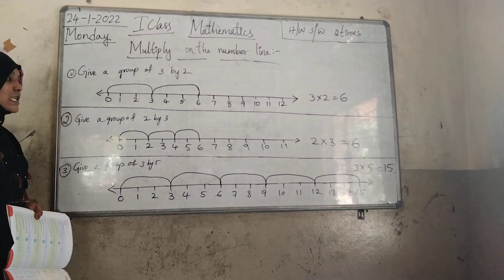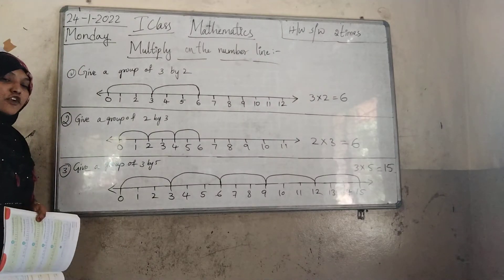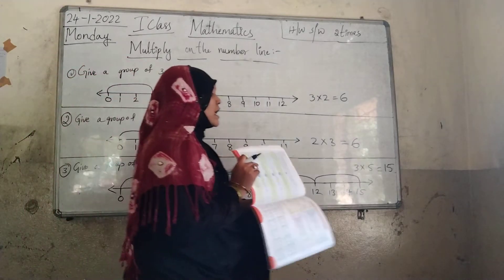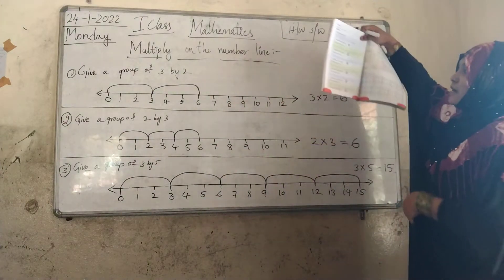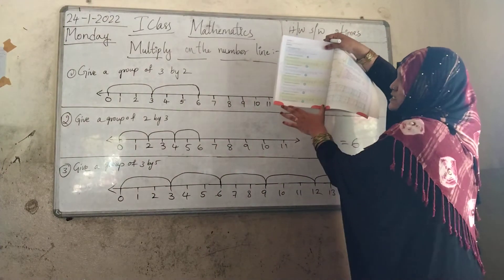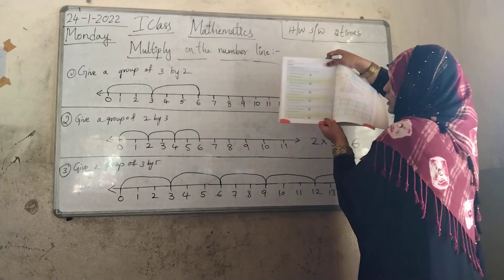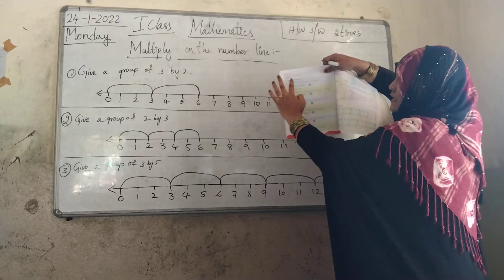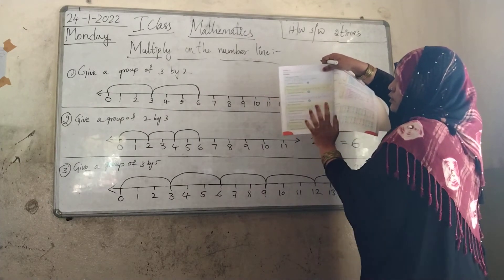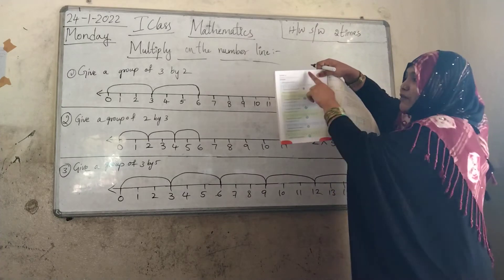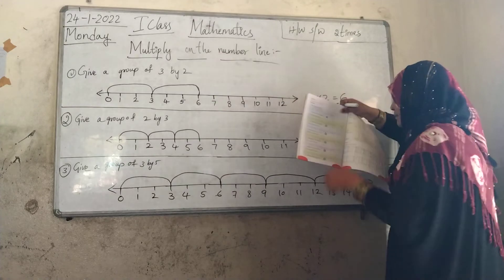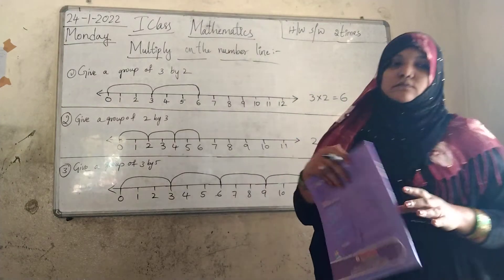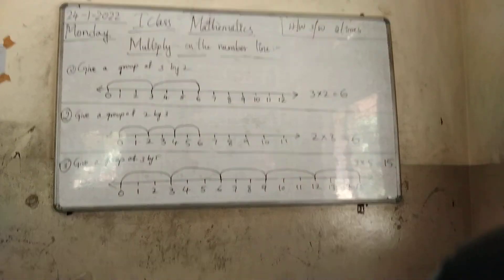Did you understand this? If you understand, you have to write all these number lines in your notebook — from here to here. How many number lines are there? 1, 2, 3, 4, 5, 6. You have to write all 6 in your notebook.